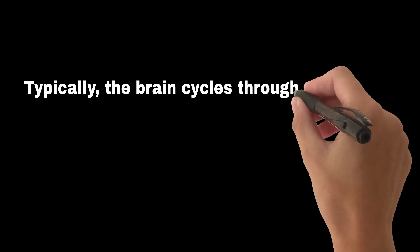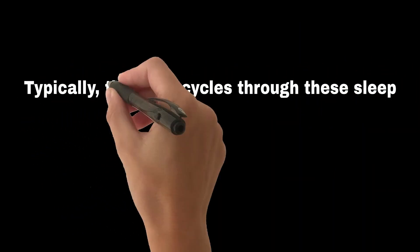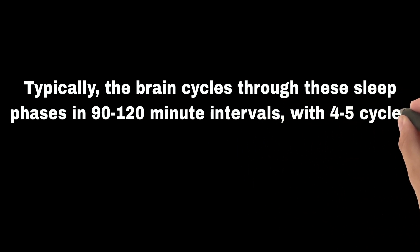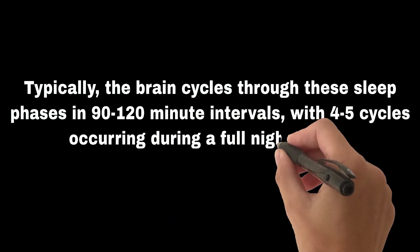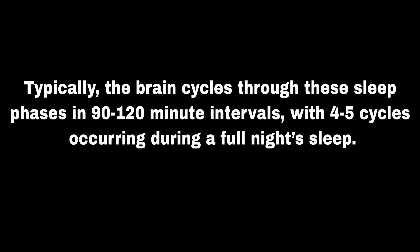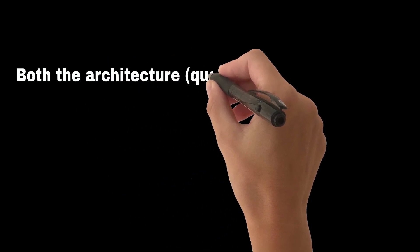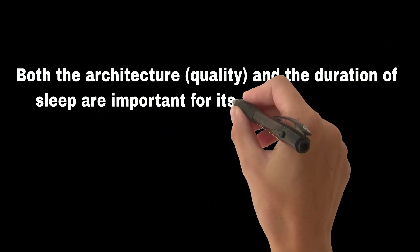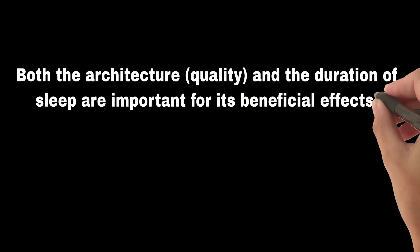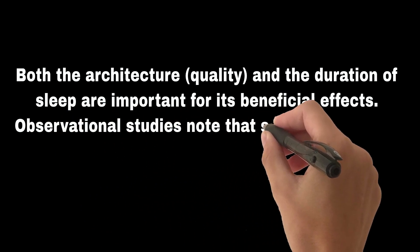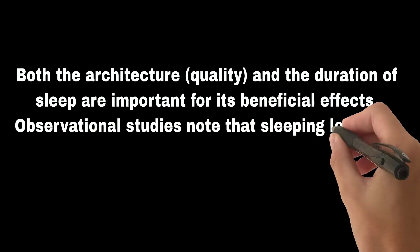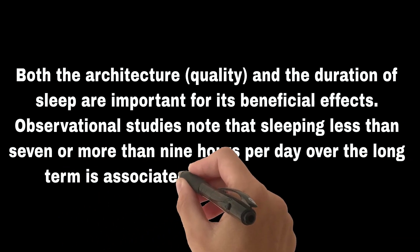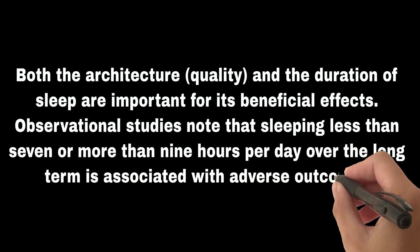Typically, the brain cycles through these sleep phases in 90–120 minute intervals, with four to five cycles occurring during a full night's sleep. Both the architecture, quality, and duration of sleep are important for its beneficial effects. Observational studies note that sleeping less than seven or more than nine hours per day over the long term is associated with adverse outcomes.